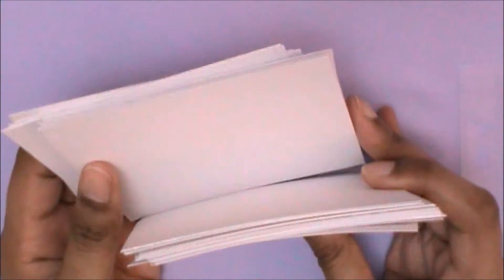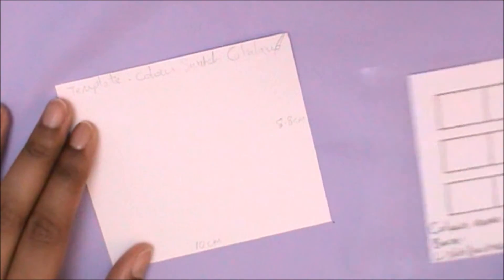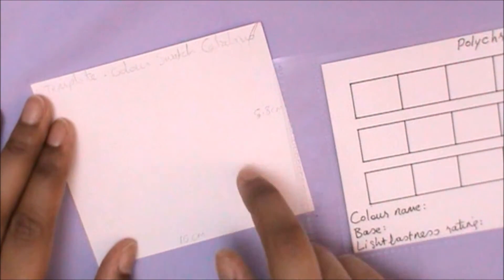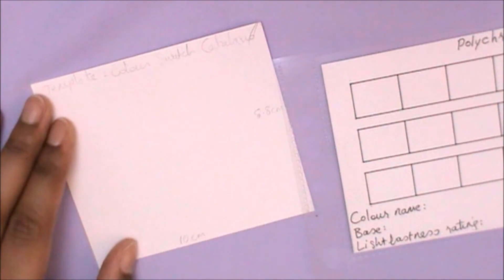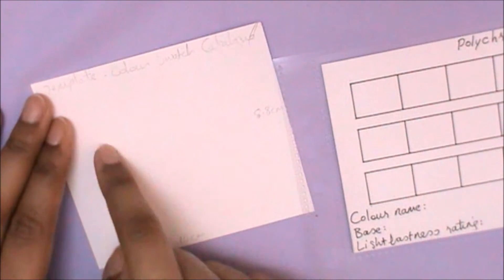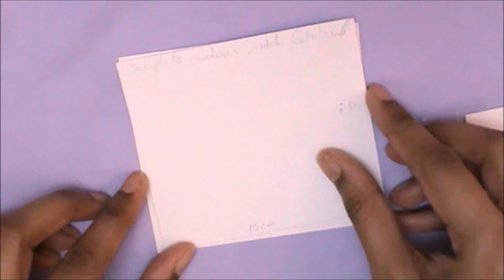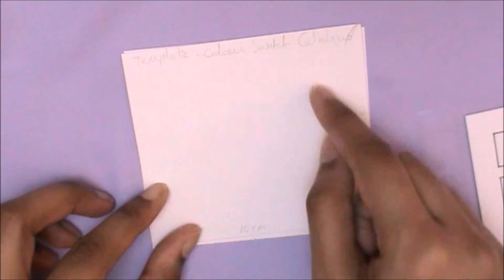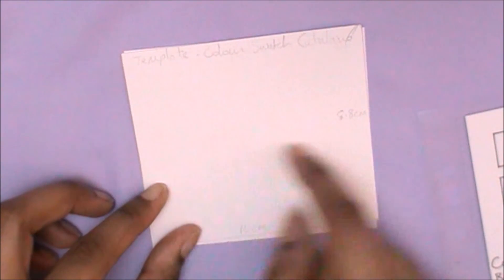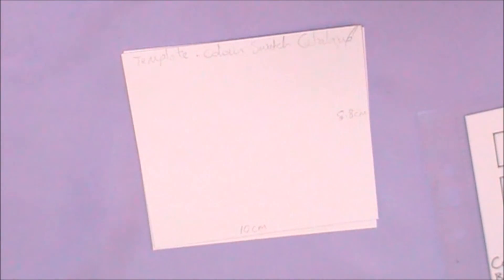Once you have all of your pieces cut out, we then need to create a template. With the template we are going to draw this out and then use a craft knife to cut out the little rectangle sections. With the template we can then place it on top of the card we want to draw on and just draw around the cut out rectangle pieces. That will be much quicker than measuring things out on each piece with a ruler.